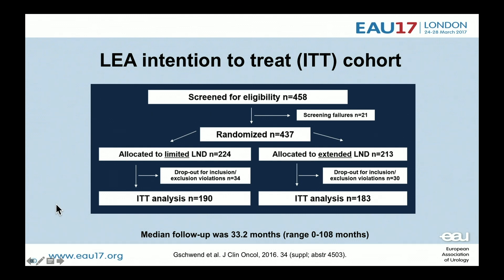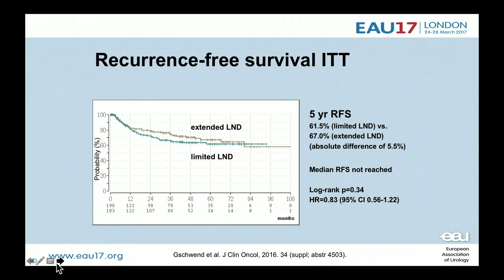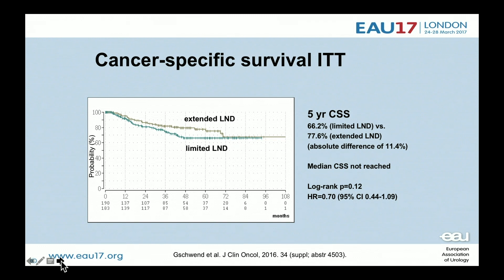This is the CONSORT diagram. It's a smaller trial — they randomized 437 patients with fairly balanced randomization. One issue is that this becomes a much smaller study with lower power to detect small differences, and it's highly unlikely that extended node dissection would be associated with a dramatic improvement in progression-free or overall survival. The Kaplan-Meier plot showed no difference in recurrence-free survival and no difference in five-year cancer-specific survival — essentially reported out as a negative trial, though they're still trying to get it published.